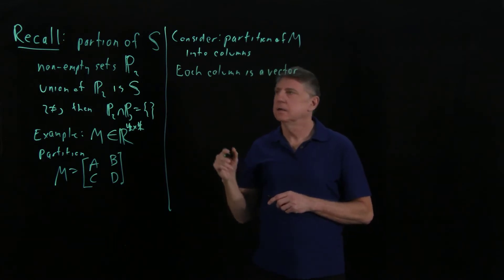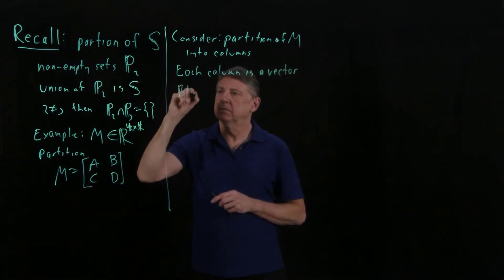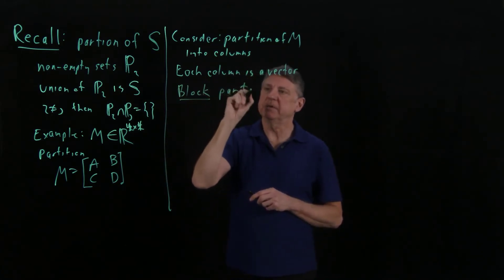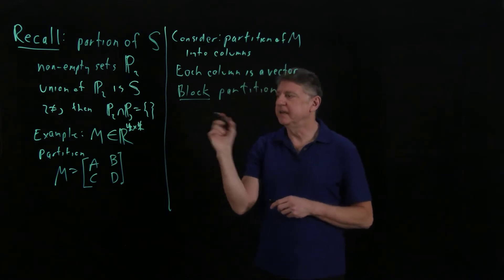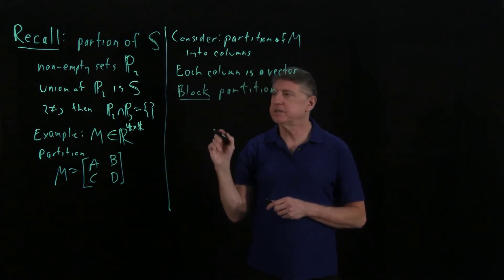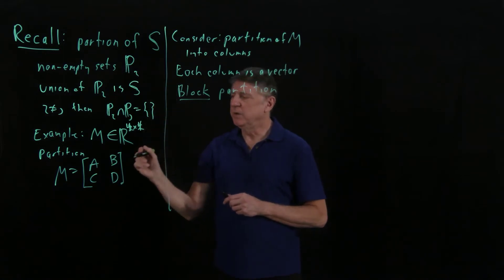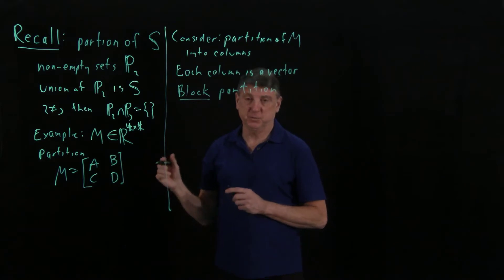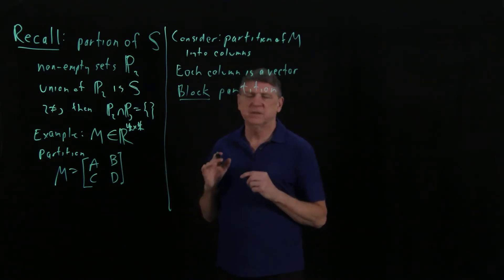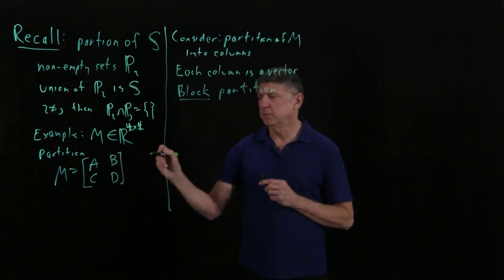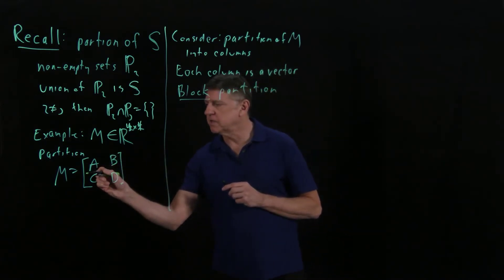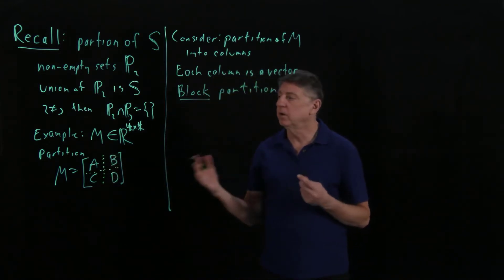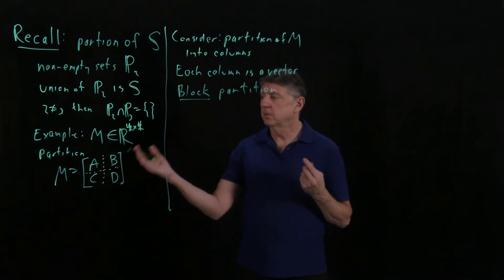And this is also called a block partition. So sometimes when we say blocks, what we mean is partition. Strictly speaking, we could have partitioned things so that, say, the corners of the matrix were one partition. There are such partitions, but they're really uncommon. Almost always what we do is we put it into blocks, and we'll often put little dashed lines to indicate that partition.